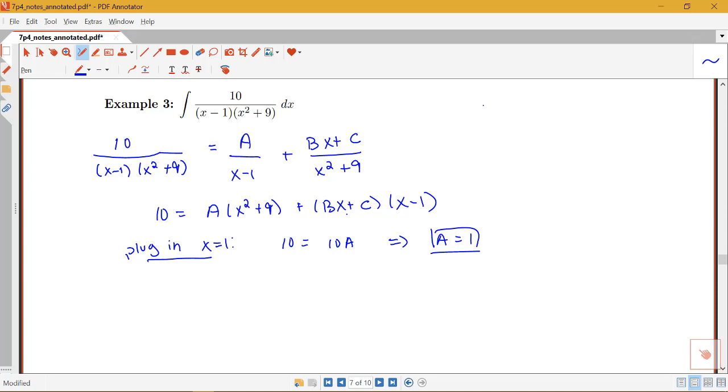And then I think about what other values might I want to plug in. Well there's nothing else that's going to make a term go away completely so I'll just choose to plug in some other nice small values. So if I plug in x=0 I can have 10 = 9A + C(-1). I already know what A is so if I plug in A I have 10 = 9 - C. So that gives me 1 = -C or C = -1.